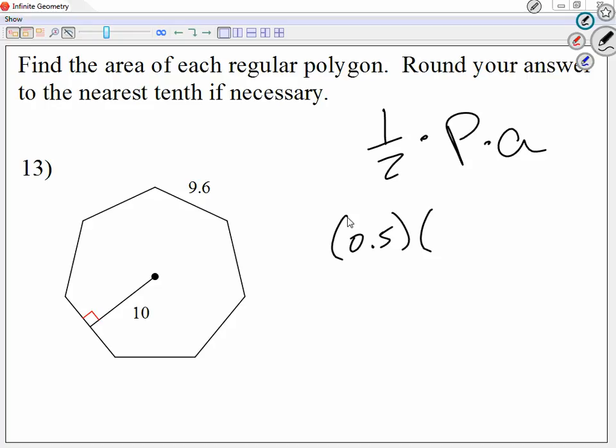The perimeter, one of the sides is 9.6. There's 7 sides. So the perimeter will be 9.6 times 7. I know one side is 9.6, there are 7 sides. So that's why I said the perimeter is 9.6 times 7.